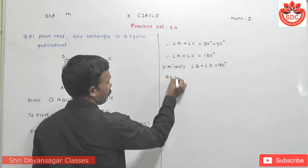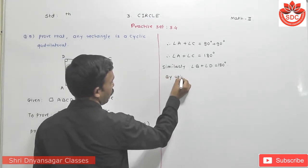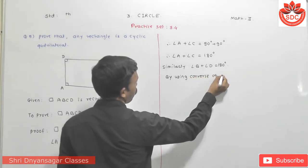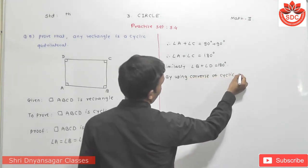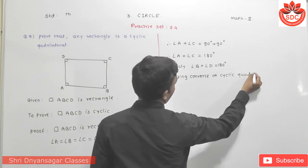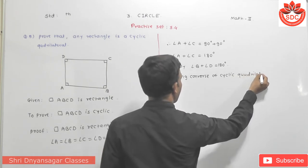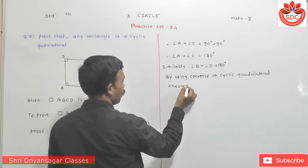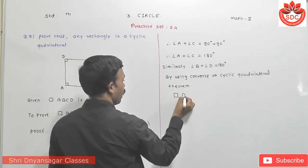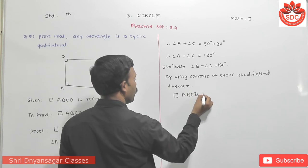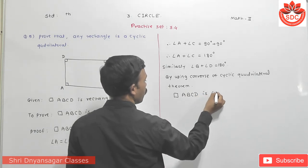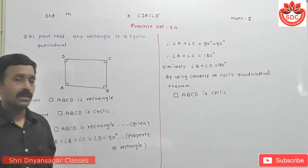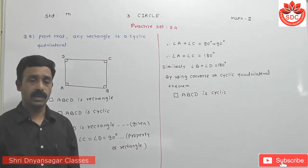By using the converse of the cyclic quadrilateral theorem, since opposite angles are supplementary, this quadrilateral ABCD is cyclic. Can you understand this? It's simple.